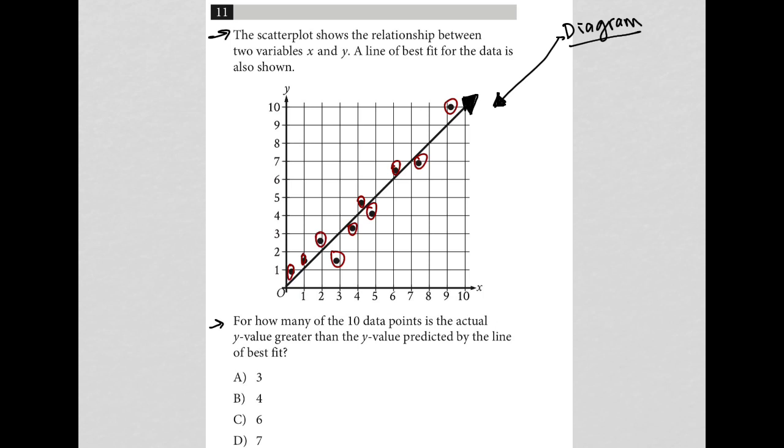So in other words, if we look at this graph, how many points are on top of the line? That's basically all this is asking. How many of the 10 data points is the actual y value greater than the y value predicted?